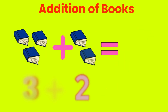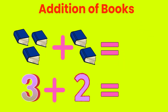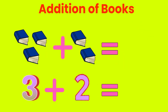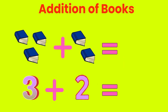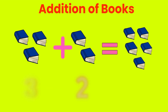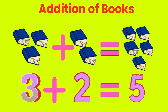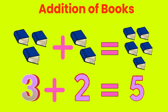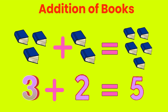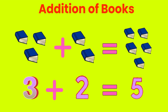Let's do addition of books. 3 books plus 2 books. Add 3 plus 2. Answer is... 3 books plus 2 books. Total is 5 books. 3 plus 2 is 5.